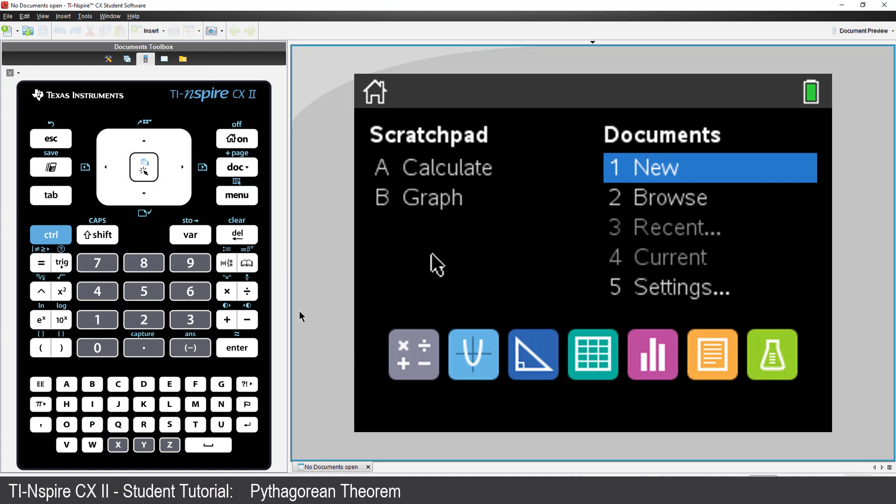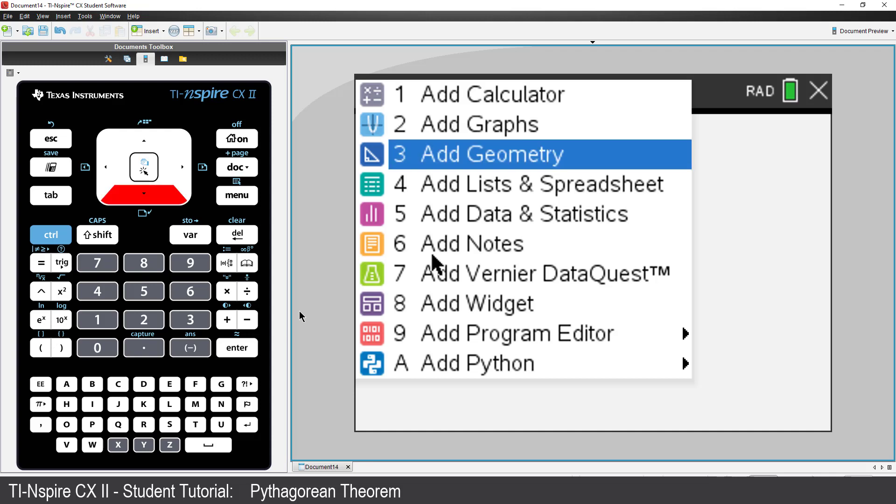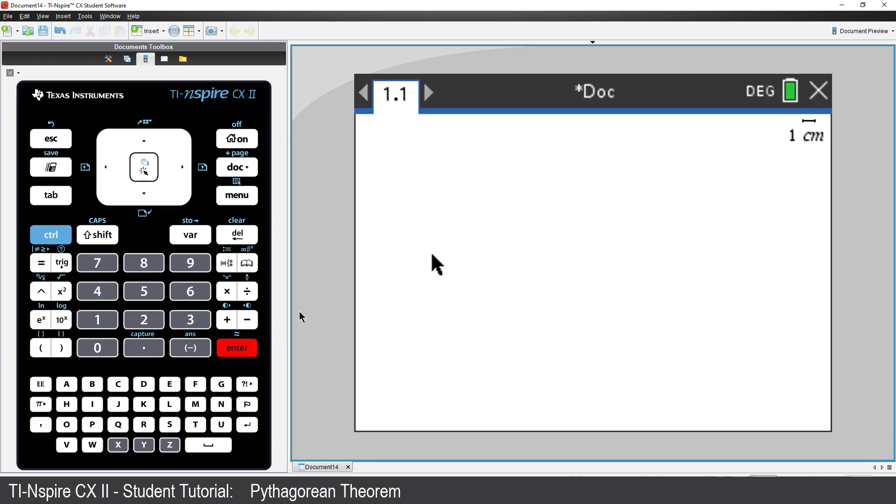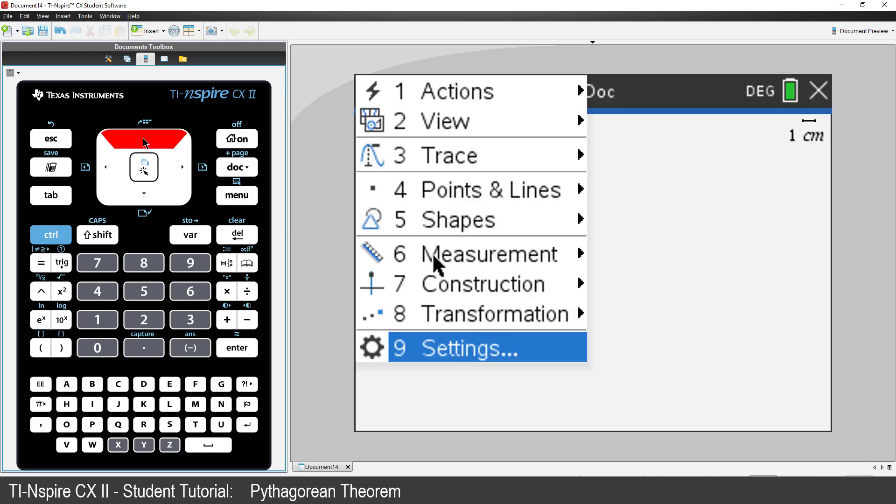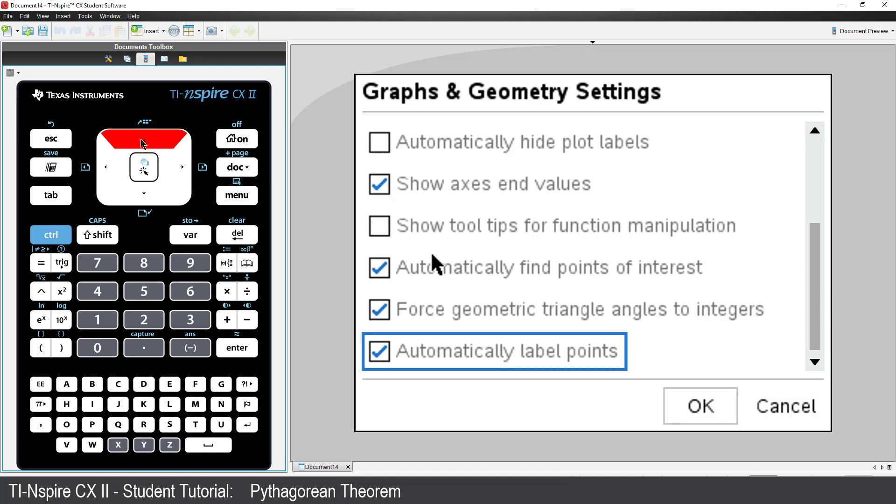Start a new document and insert a geometry application. In this activity, the focus is on sides and side lengths, so I'll use the Settings menu to switch off the option to Automatically Label Points. Press Menu, select Settings, then scroll up from the bottom and uncheck Automatically Label Points, then press Enter.